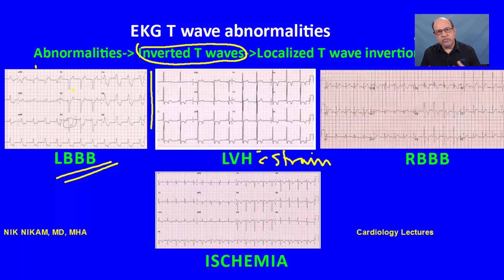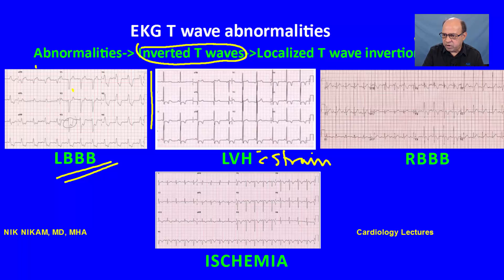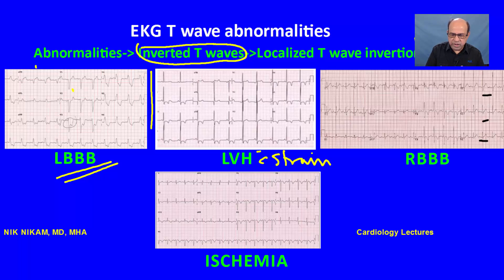The third condition for localized T wave inversion is right bundle branch block, where we see T wave inversion in V1, V2, V3 — while the lateral leads show upright T waves. Another condition is ischemia: localized anterior wall ischemia can give rise to T wave inversion in V1 to V4.